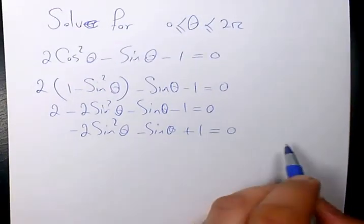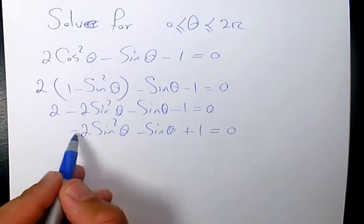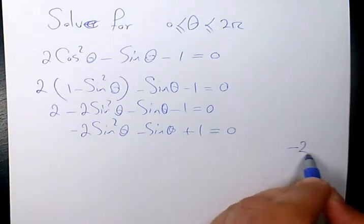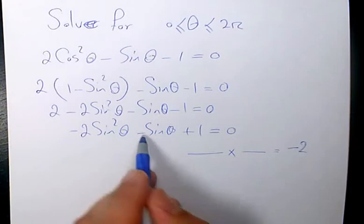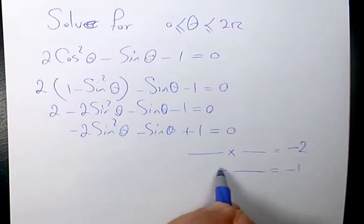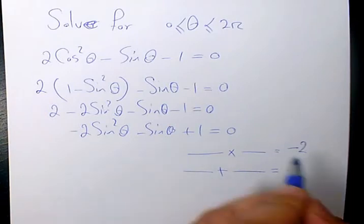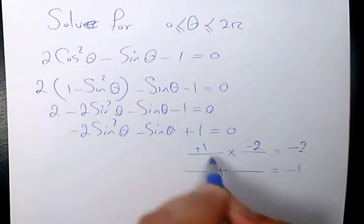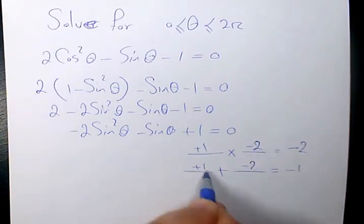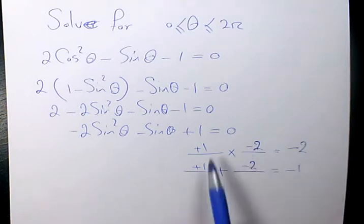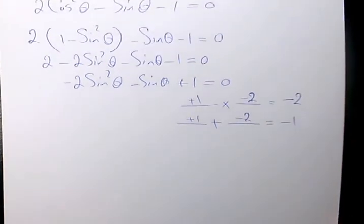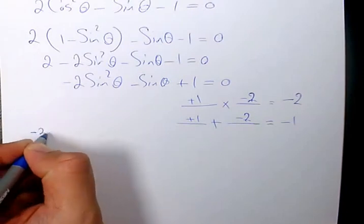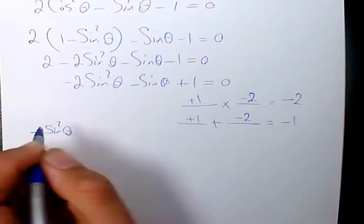Now I need to factor this. I look for two numbers: negative 2 times 1 is negative 2, and the middle coefficient is negative 1. I need two numbers that multiply to negative 2 and add to negative 1. Those numbers are negative 2 and positive 1 — when you add them you get negative 1, and when you multiply them you get negative 2.